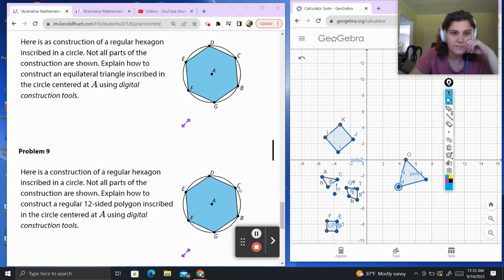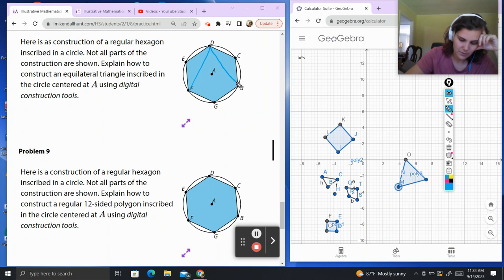Problem 8. Here is a construction of a regular hexagon inscribed in a circle. That just means it's inside the circle. Not all parts of the construction are shown. Explain how to construct an equilateral triangle inscribed in the circle centered at A using digital construction tools. If I was going to construct an equilateral triangle, I would draw a line segment from here to here, a line segment from here to here, and a line segment from here to here. And there we go. There's my equilateral triangle chilling inside of my regular hexagon.